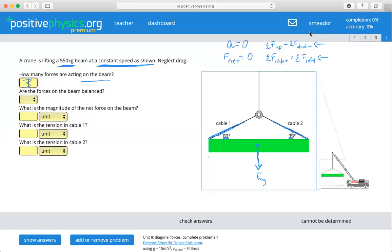Are the forces on the beam balanced? Well that was what we just talked about. Yes, they are balanced because even though they're moving at a constant speed, there's no acceleration in any direction and therefore our force net is equal to zero. So yes, the forces are balanced.